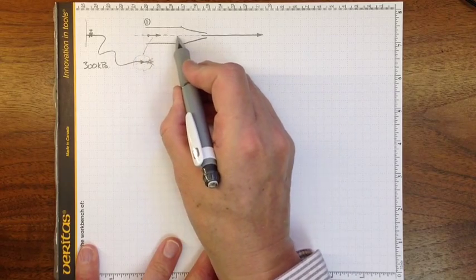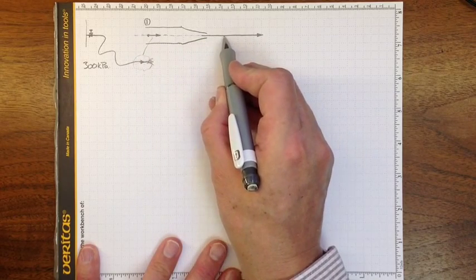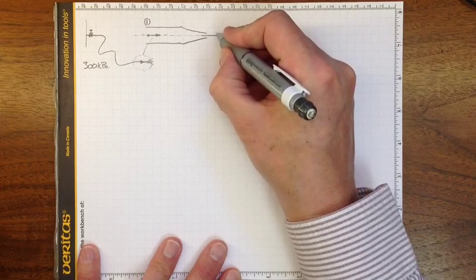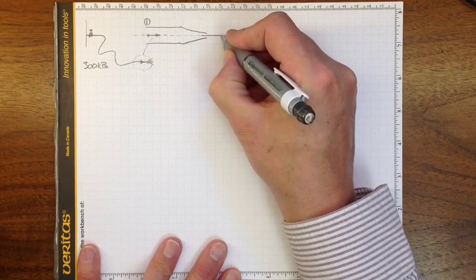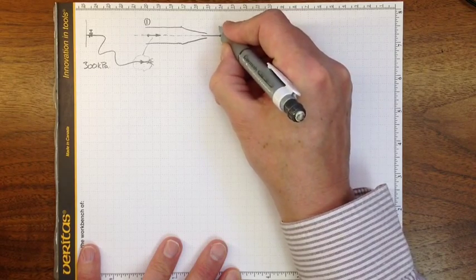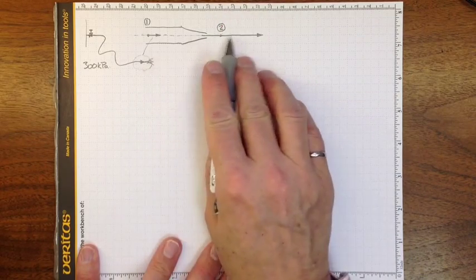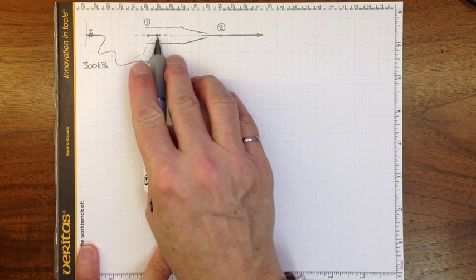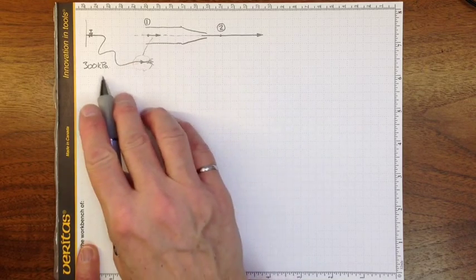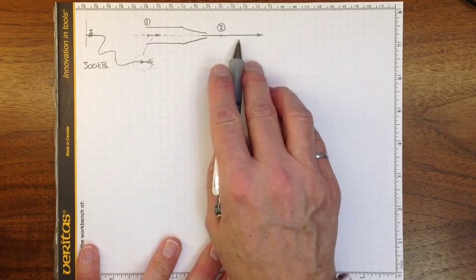We follow a streamline from location one and the fluid accelerates quite a bit to location two where it comes out to the atmosphere here. It's going quite fast, much faster than it is over here at location one. We can use Bernoulli's equation to figure out how fast.